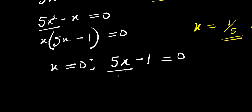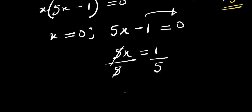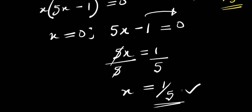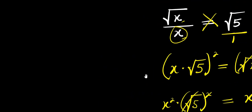To solve 5x minus 1 equals zero: move 1 over to get 5x equals 1, then divide both sides by 5 — 5 eliminates 5 — so x equals 1 over 5. So these are the two solutions from this first method: x equals 0 and x equals 1 over 5.